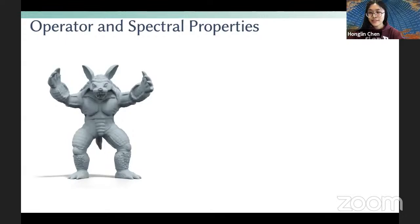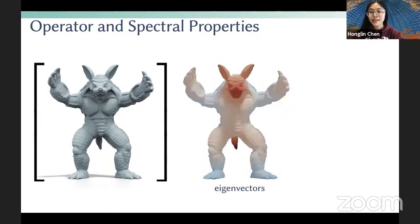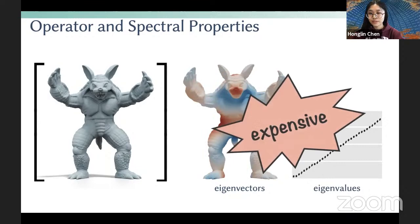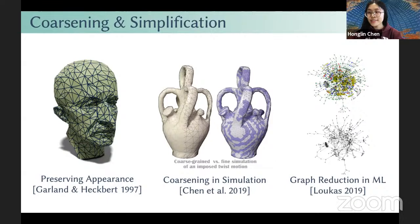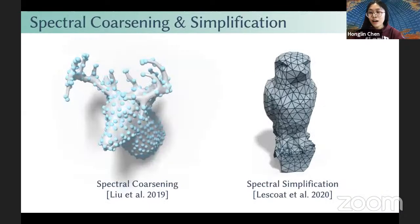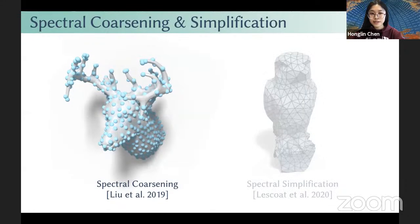Discrete operators are everywhere in computer graphics, and one of their key properties is the spectral properties — namely the eigenvectors and the eigenvalues. However, when defined on a high-resolution domain, those matrices and their spectral properties are computationally expensive to use. Coarsening has become an extensively studied topic in graphics and machine learning with the aim of preserving different geometric and physical properties under decimations. Recent methods show that it's possible to simplify a discrete operator while preserving its spectral properties. The closest work to ours is Liu and colleagues' work in 2019 on spectral coarsening and spectral mesh simplification.